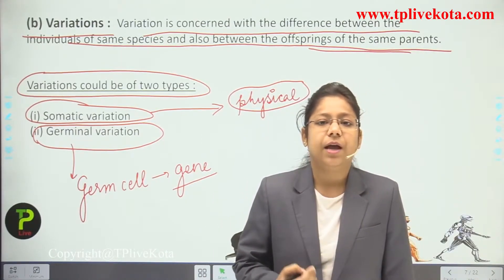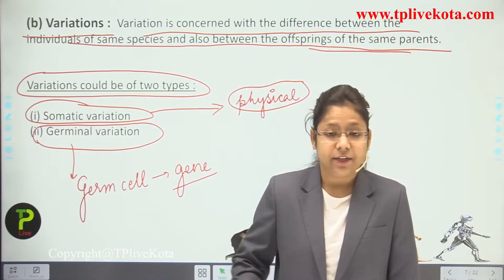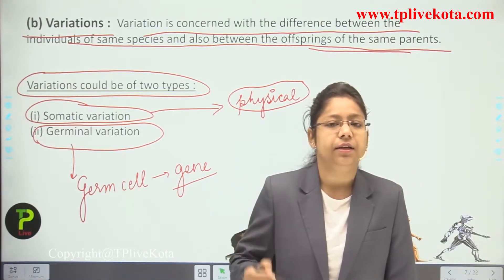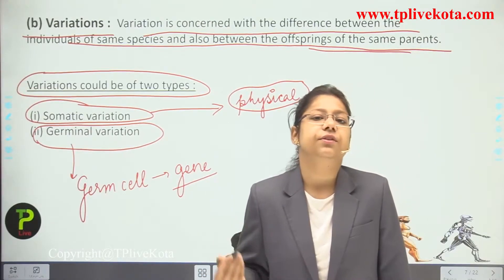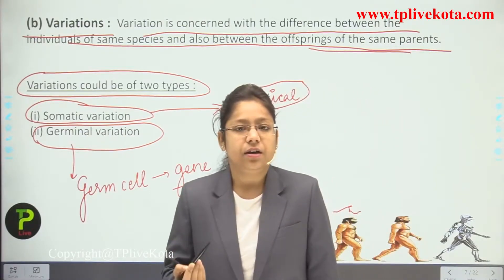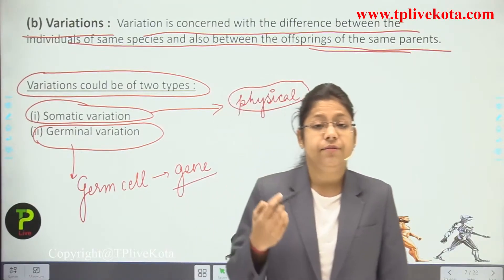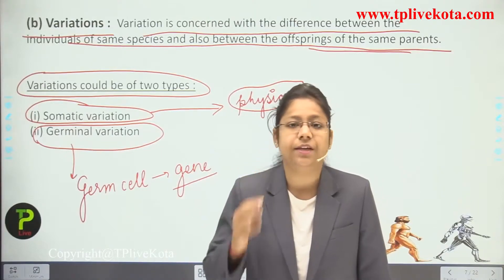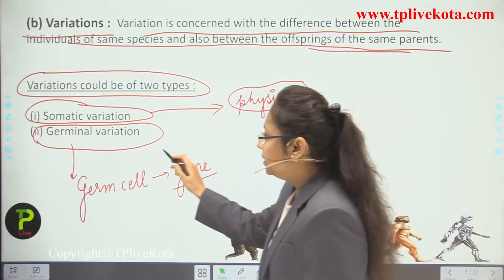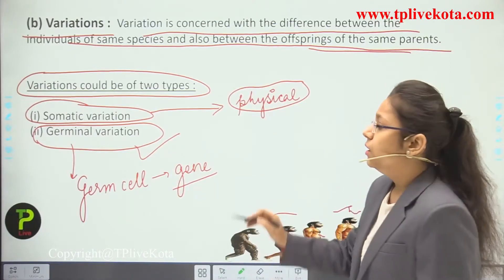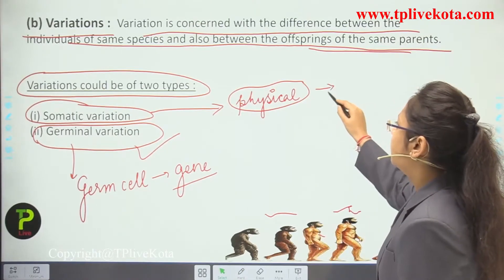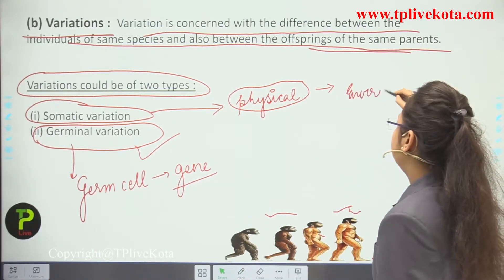Somatic variations are those which a person acquires from their external environment and they die with the person — like knowledge gained by reading. But germinal characters like curly hair, fair color, brown eyes, or difficulty in seeing — these will get transferred to children. Somatic variation is only physical change occurring inside the human body because of the environment in which a person is living.